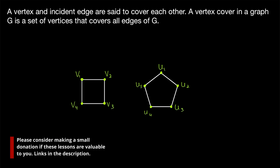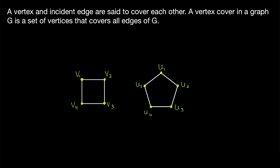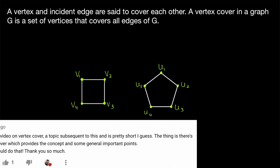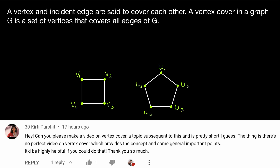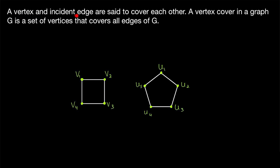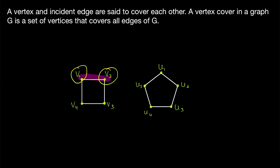Today we're going to introduce vertex covers. We'll talk about the definition, see some examples, and see a couple of results concerning vertex covers. If you're familiar with edge covers, this is a very similar concept. A vertex and incident edge are said to cover each other. For example, looking at this four cycle, the edge V1, V2 covers V1 and it covers V2. We could also say that V1 covers this edge, and we could say that V2 covers this edge. So a vertex cover in a graph is a set of vertices that covers all edges of the graph.